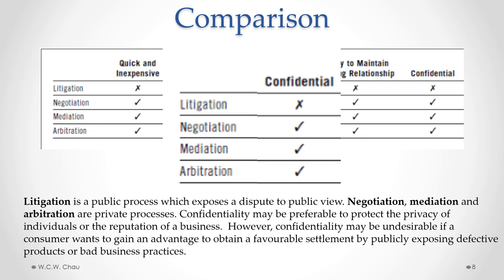The next criteria is whether the dispute remains confidential and whether the details of the dispute are confidential. Litigation is a public process, which inherently exposes a dispute to public view — when you start a lawsuit, it becomes public knowledge. With negotiation, mediation, and arbitration, those ADR methods are all private processes. So confidentiality may be preferable if you want to protect the privacy of the individuals involved or protect the reputation of the business involved in a dispute.